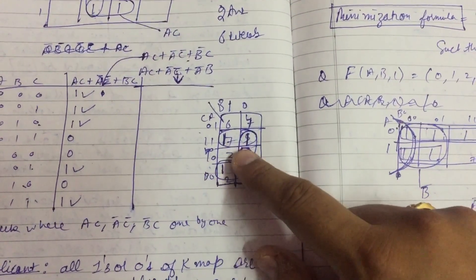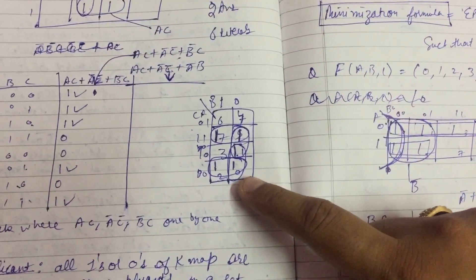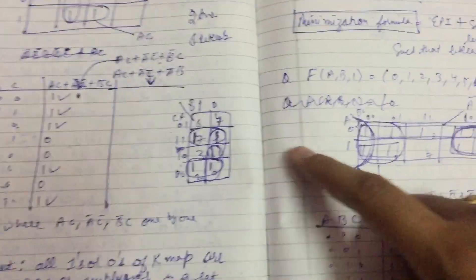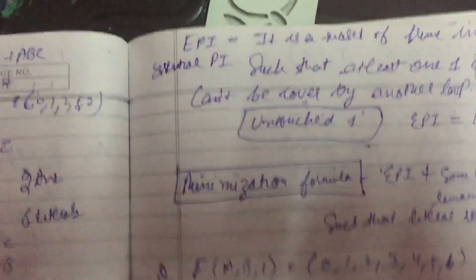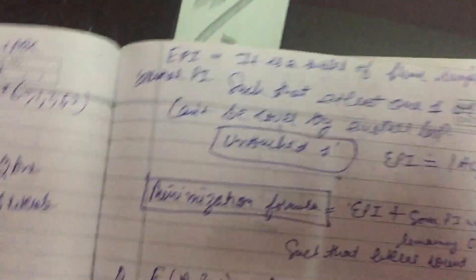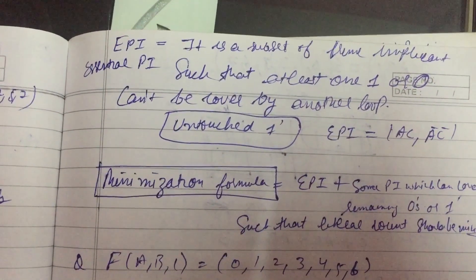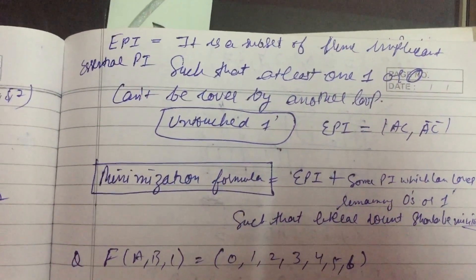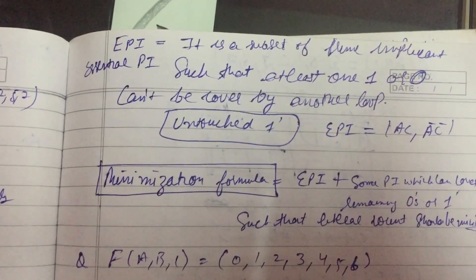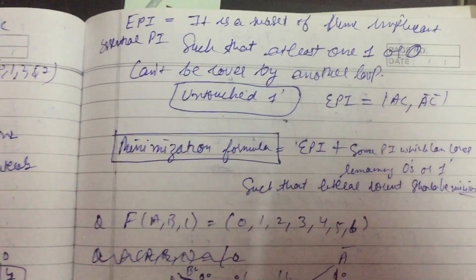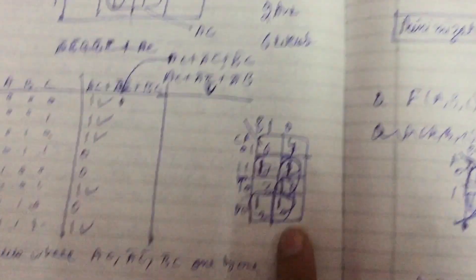Here is the example, there are four loops, so this is called prime implicants. Now what is EPI - Essential Prime Implicant? It is a subset of prime implicant such that at least one 1 or 0 can't be covered by another loop. Untouched one - EPI means you can say that here is the untouched one.